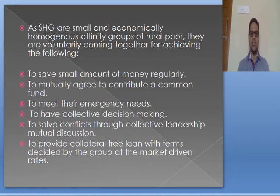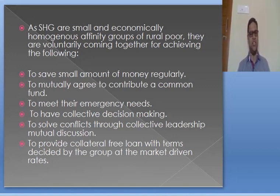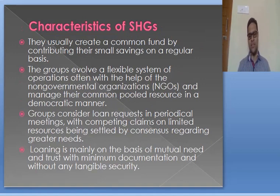All S.H.G.'s are small and economically homogeneous affinity groups of rural poor. They are voluntarily coming together for achieving the following things: to save small amounts of money regularly, to mutually agree to contribute to a common fund, to meet their emergency needs, to have collective decision making, to solve conflicts through collective leadership, and to provide collateral-free loans with terms decided by the group at market-driven rates.